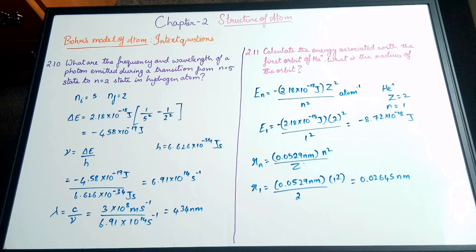With that we finish Bohr's model of the atom. Bohr's model had two major limitations: dual behavior of matter and Heisenberg's uncertainty principle, which led to the quantum model of the atom. In the next video we will discuss the dual behavior of matter.